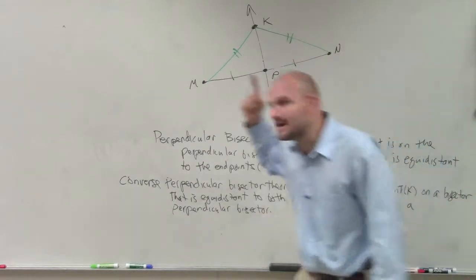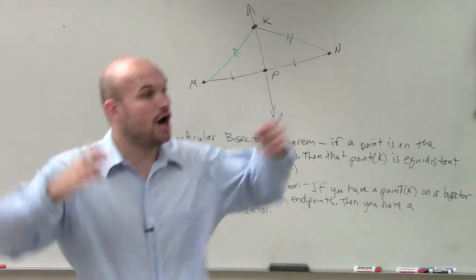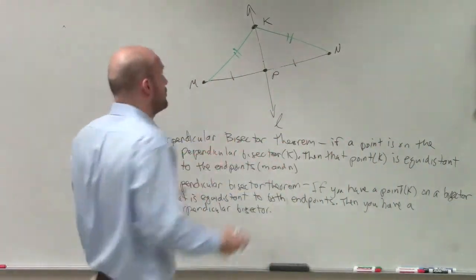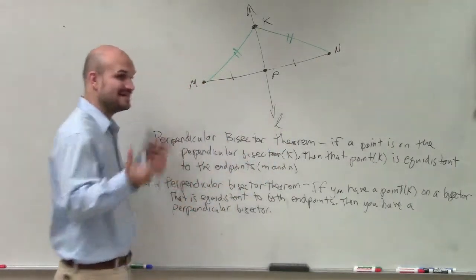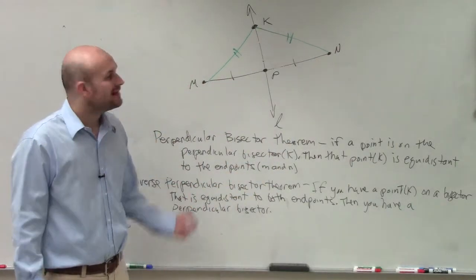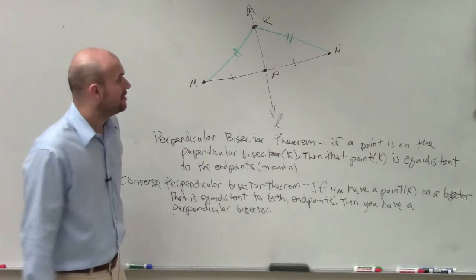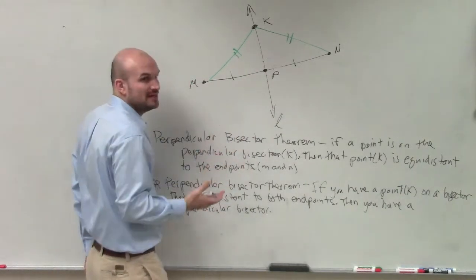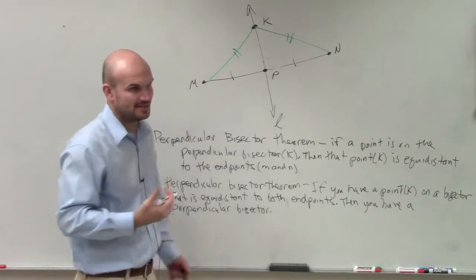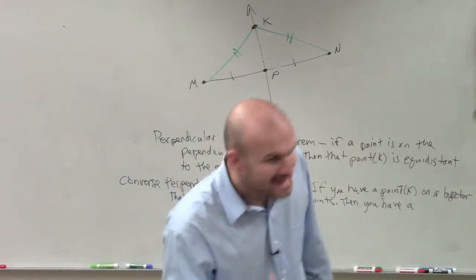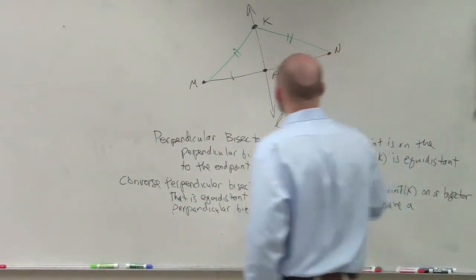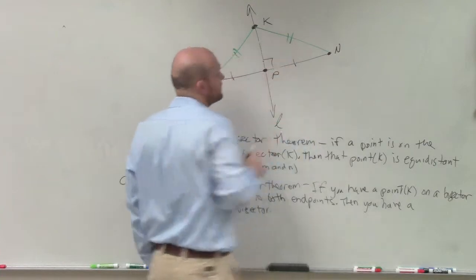You have a point that's on that bisector, and that's also equal distance to those endpoints, or to any two points. But it's equal distance to them. Then therefore, this bisector has to be a perpendicular bisector. So therefore, you know it has to be a right angle.